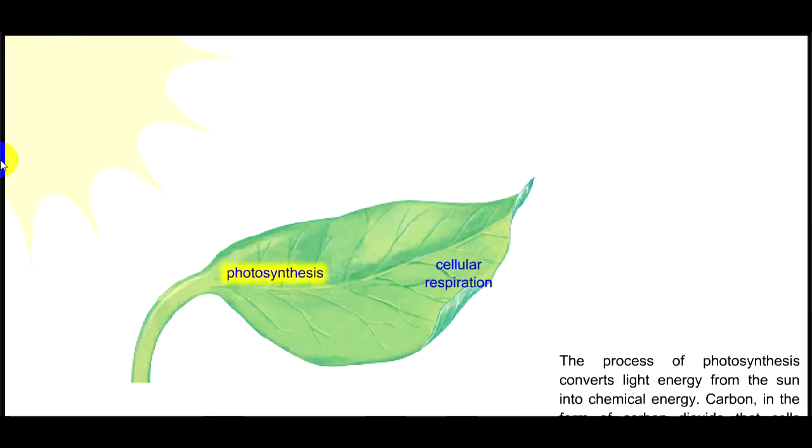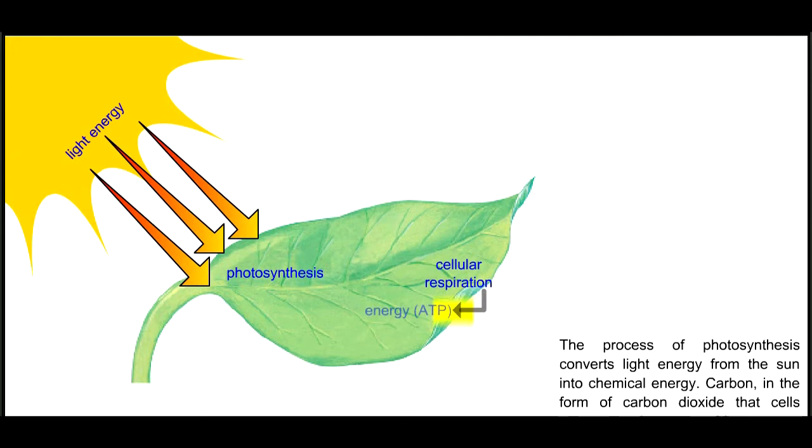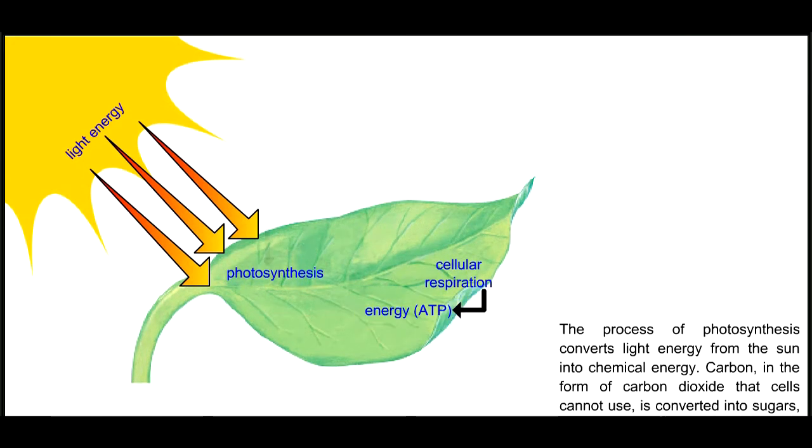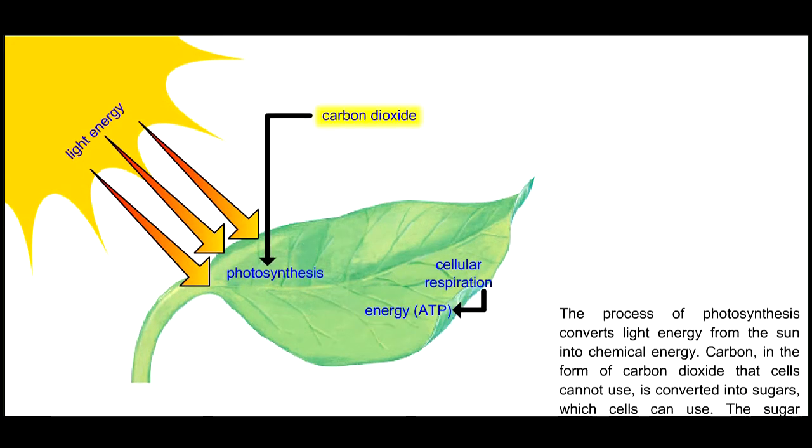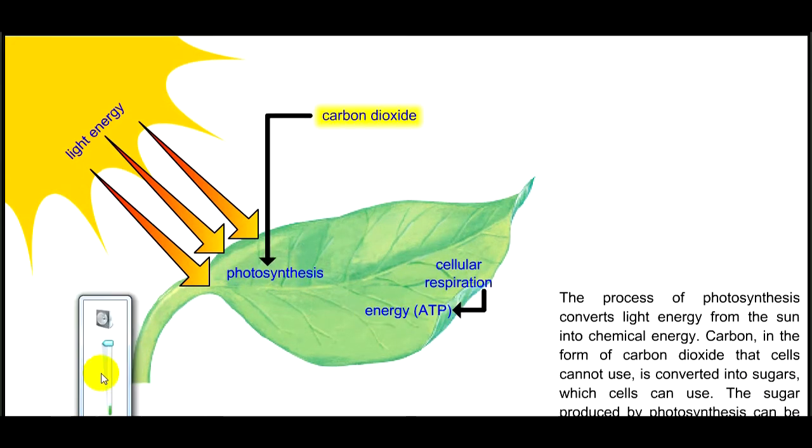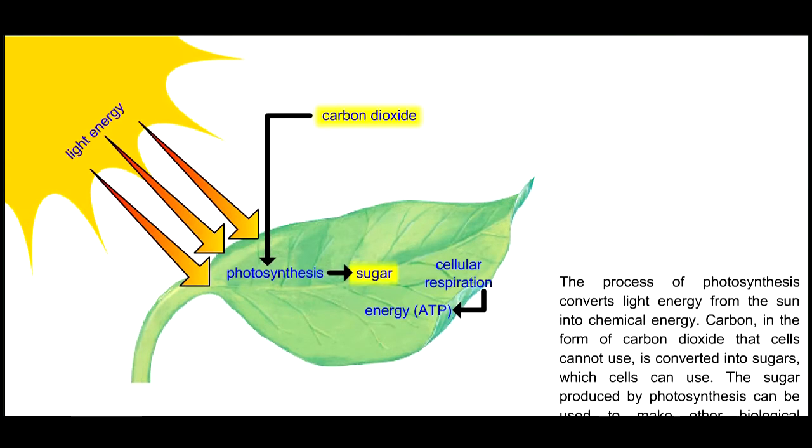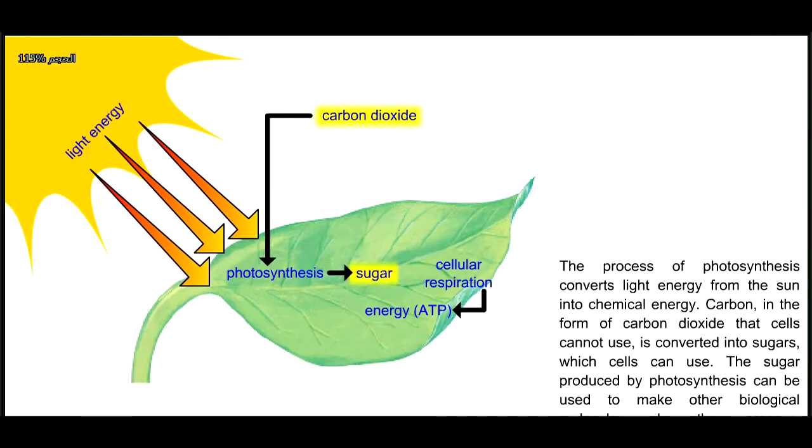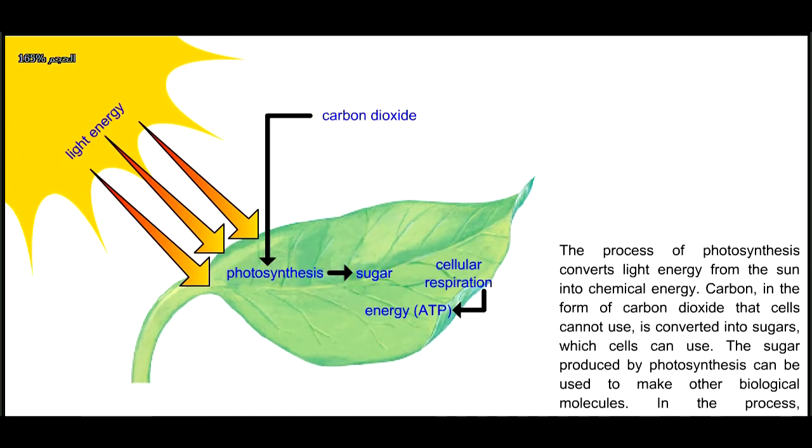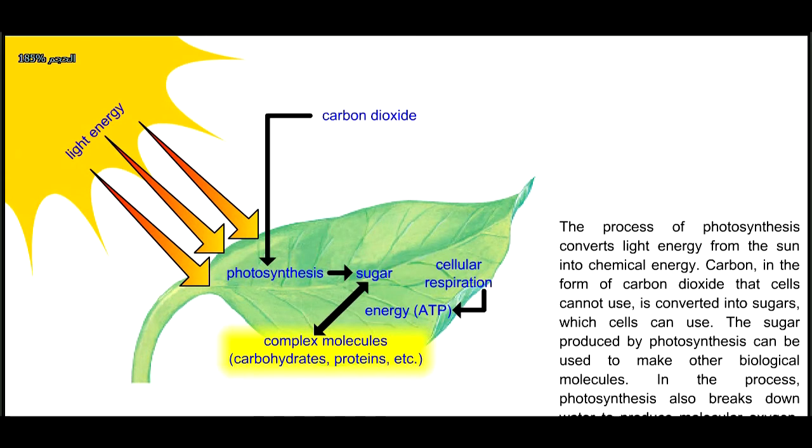The process of photosynthesis converts light energy from the sun into chemical energy. Carbon in the form of carbon dioxide that cells cannot use is converted into sugars, which cells can use.